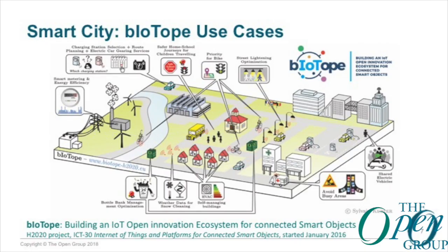These are not the final use cases — Florian showed this slide yesterday. After the initial requirements round with the cities, we understood that some initial ideas were not always the best ones, so we replaced some use cases with others. The big point to notice is that just about all these use cases involve and require information coming from many different information systems — you need to combine lots of data from different systems representing different domains using different vocabularies.